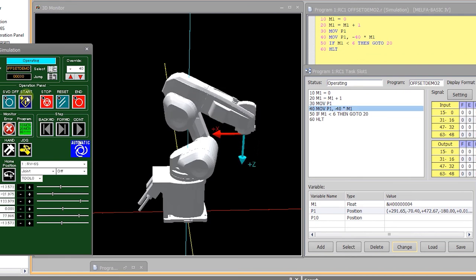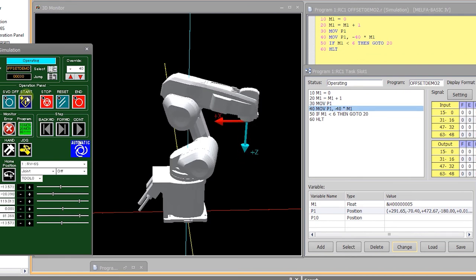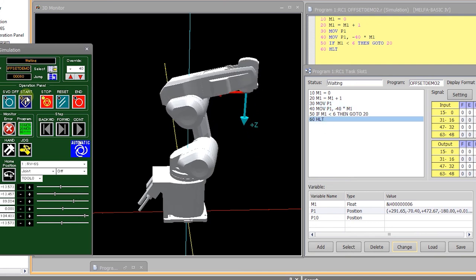It has a variable and then it multiplies that variable by negative 40 to affect an offset to the move P1 instruction at line 40.